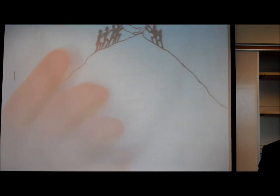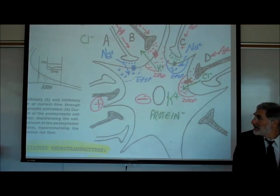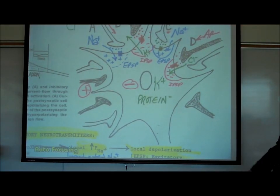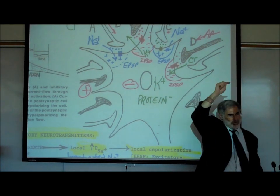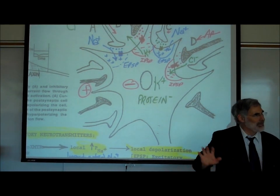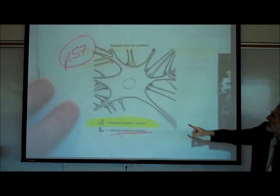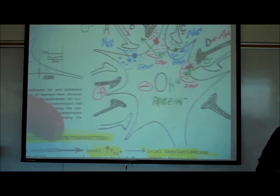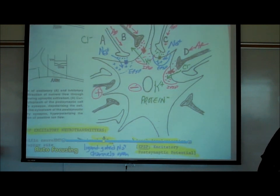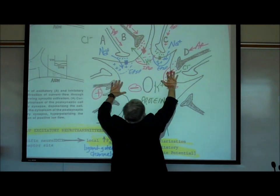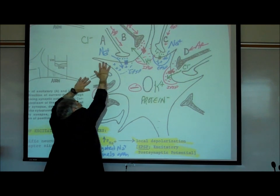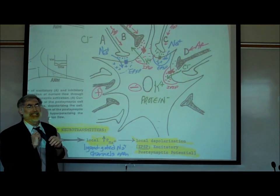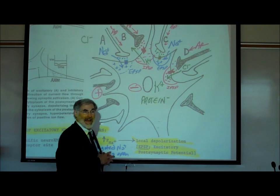This photograph is an actual photomicrograph of presynaptic neurons synapsing onto a large postsynaptic neuron. On page 58, the picture I drew is just an enlarged view of the picture we saw on the previous page — a neuron in the central nervous system with about 100 other neurons synapsing onto it.